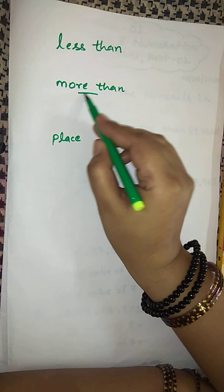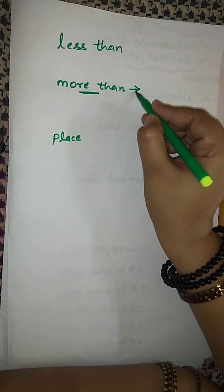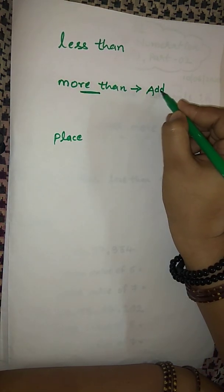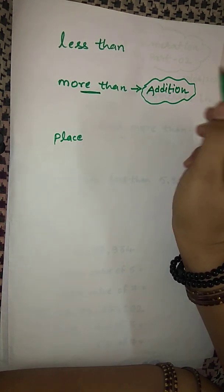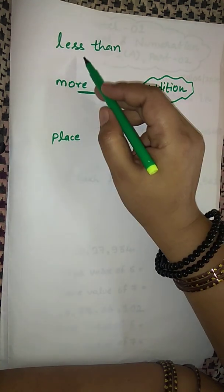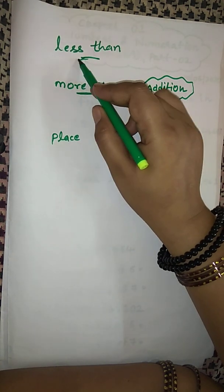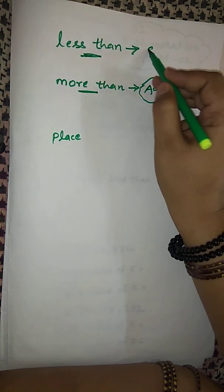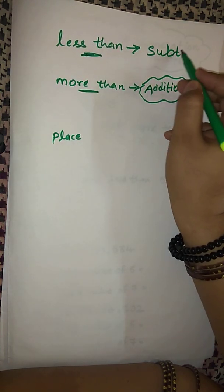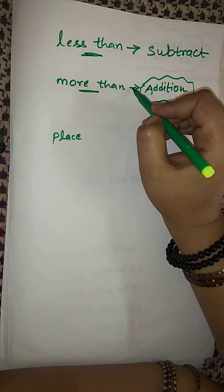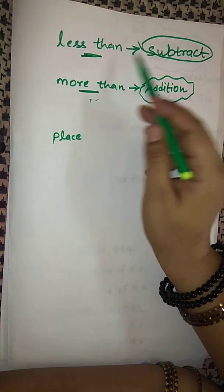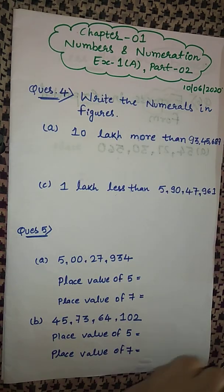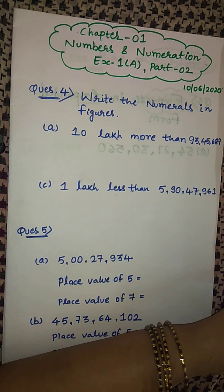Whenever you see 'more than' in a question, it stands for addition. If you see the word 'more than' anywhere in the question, it means you have to perform addition. And if you see 'less than' in the question, it means you have to perform subtraction. So: more than means plus, less than means minus.